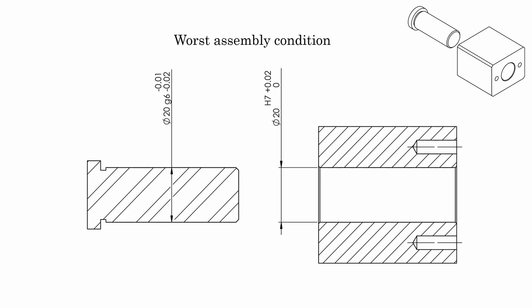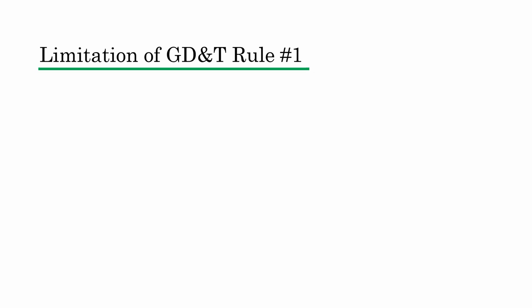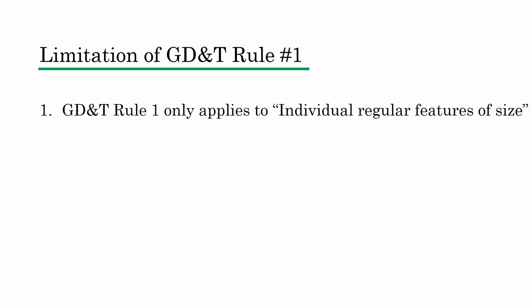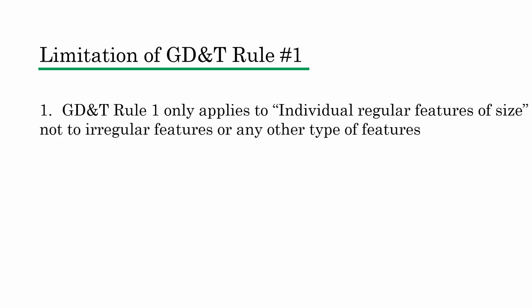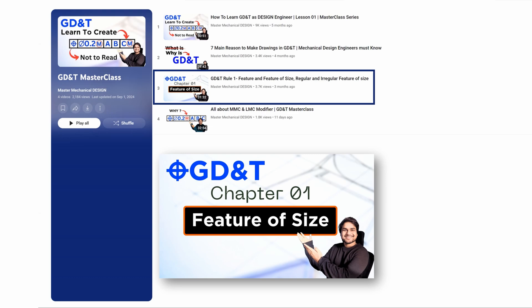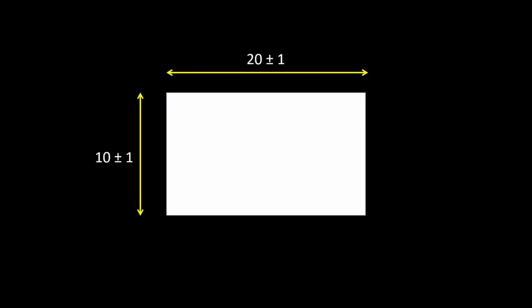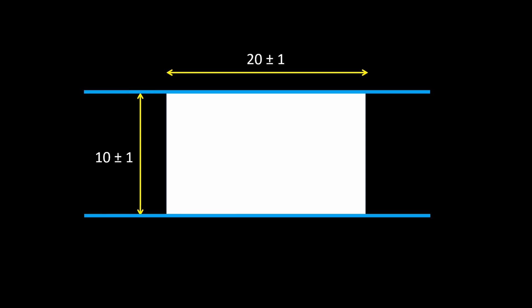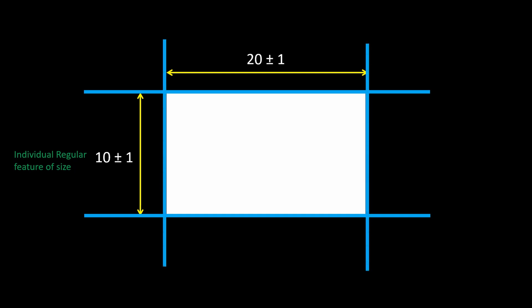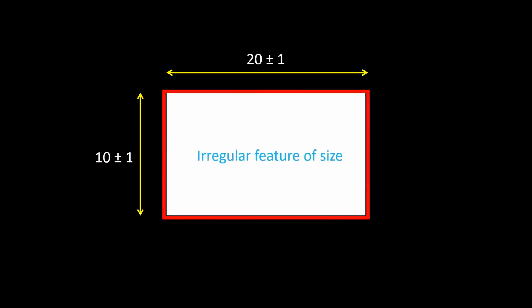GD&T rule 1 relieves the designer from worrying about the worst assembly condition. You just have to define the right fit — H7/G6 or whatever is needed. Now, the limitations of GD&T rule 1: first, rule 1 applies only to individual regular features of size, not to irregular features of size or other feature types. For a rectangular block with sizes 10 mm plus minus 1 mm and 20 mm plus minus 1 mm, rule 1 applies to each feature of size separately — not to the entire block as a whole.